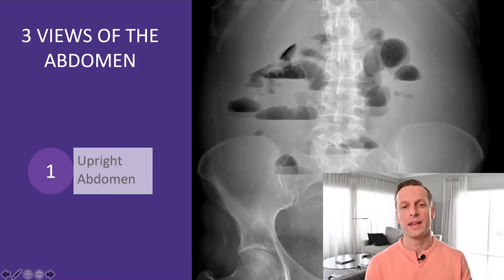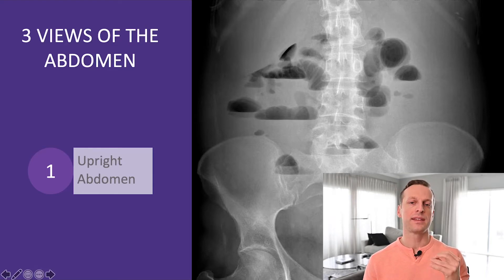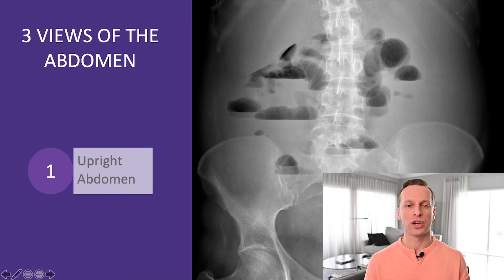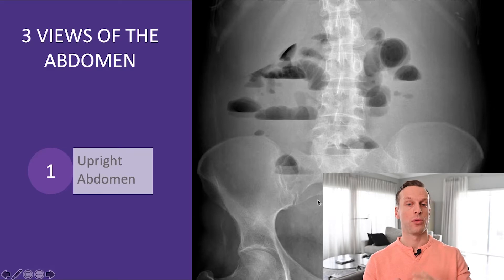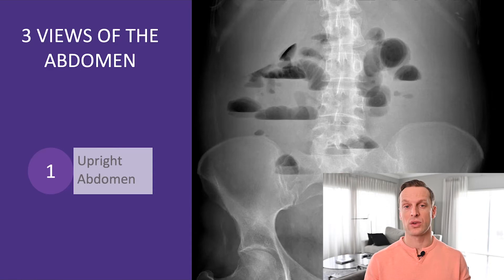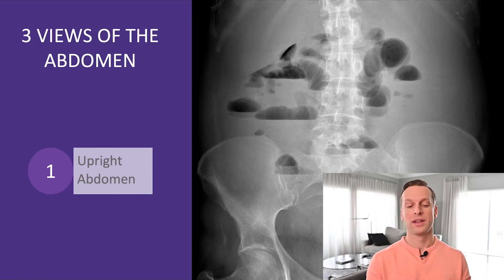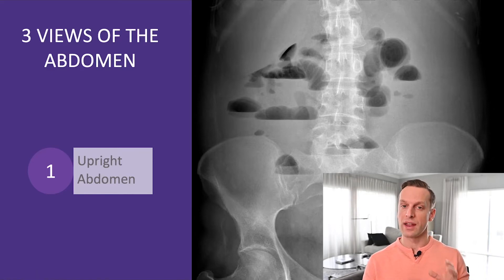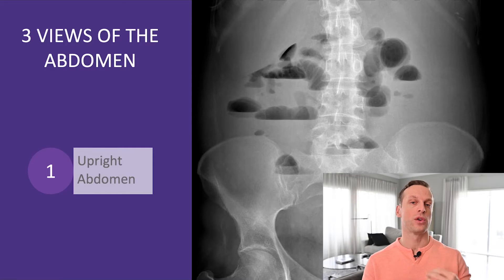The first view is the upright abdomen. The upright abdomen is very useful because it shows us those air-fluid levels that are a very classic feature of a bowel obstruction. Air-fluid levels can be present in both mechanical and functional bowel obstructions — gastroenteritis or an ileus from a medical cause can also cause these air-fluid levels — but they are a very common feature expected when looking at a patient with a small bowel obstruction.